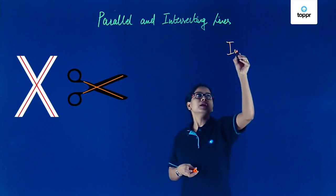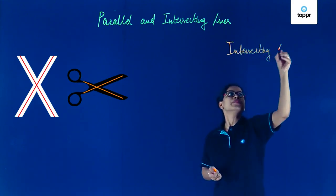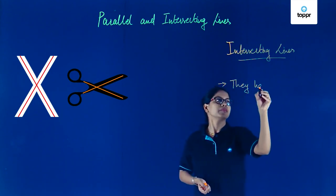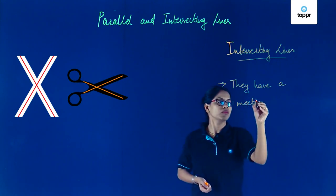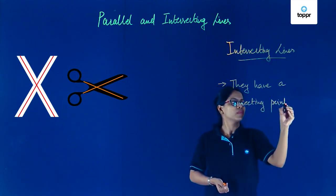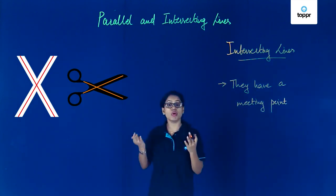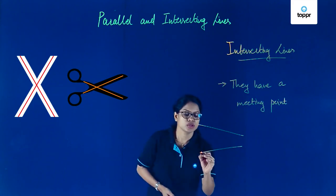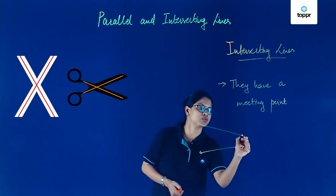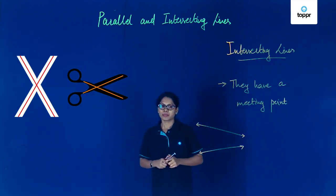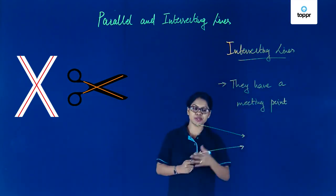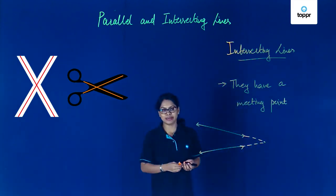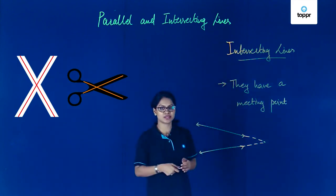Lines which meet are called intersecting lines. The only feature to remember here is that they have a meeting point. Remember, at times the meeting point is not so obvious. Suppose there is one line going this way and another line going that way — right now they're not meeting, but if I extend them beyond, will they intersect? Yes, they will. So watch out for such lines, and remember: when they meet, we call them intersecting lines.